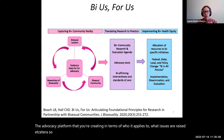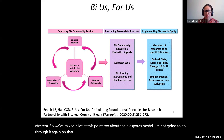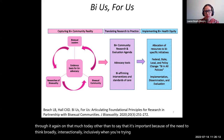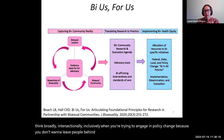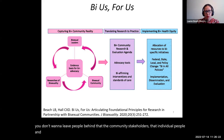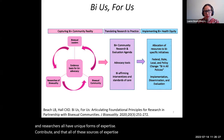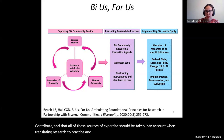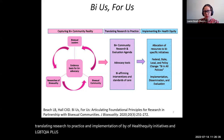We've talked a lot about the bias forest model. It's important because of the need to think broadly and intersectionally and inclusively when you're trying to engage in policy change, because you don't want to leave people behind. Community stakeholders, individual people, and researchers all have unique forms of expertise to contribute, and all of these sources of expertise should be taken into account when translating research to practice and implementation of health equity initiatives for LGBTQIA+ communities.